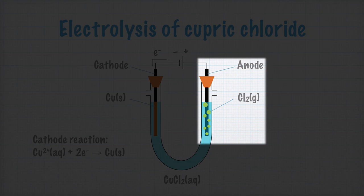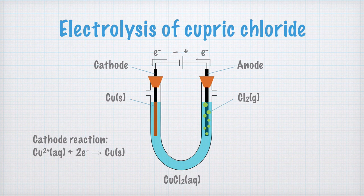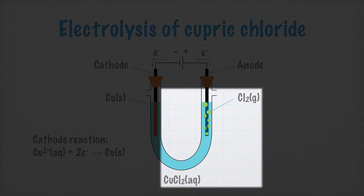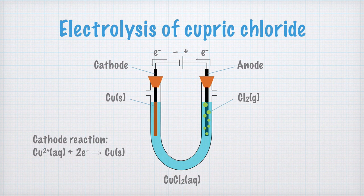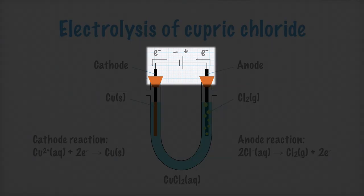At the anode, there is instead an electron deficit, or electron shortage, since the electrons move in this direction in the circuit. This means that the negatively charged chloride ions are pulled towards the anode, where they are oxidized. We write the anode reaction like this, that two aqueous chloride ions are oxidized and form chlorine gas. At the same time, two electrons are released, electrons that then move around the circuit here.